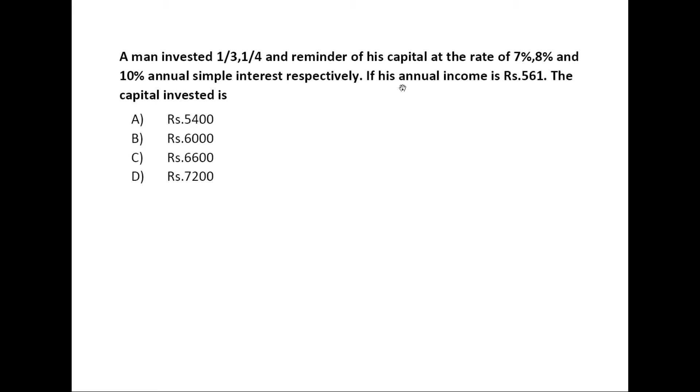If his annual income is rupees 561, the capital invested is: option A rupees 5400, option B rupees 6000, option C rupees 6600, and option D rupees 7200.